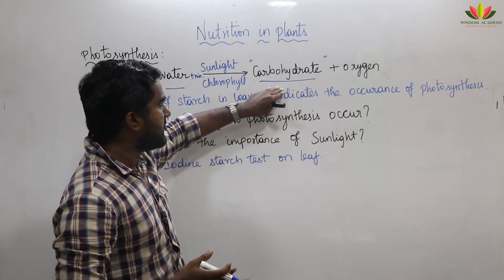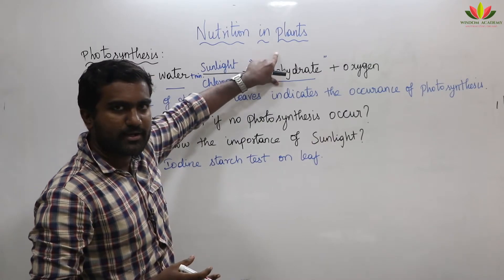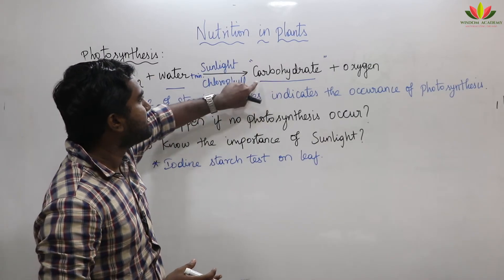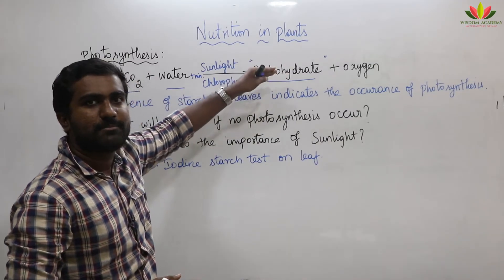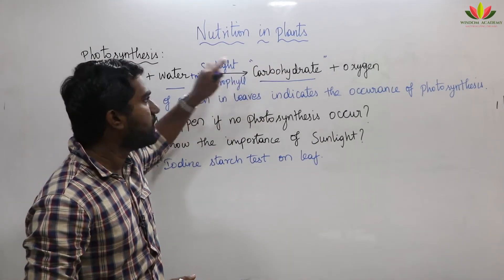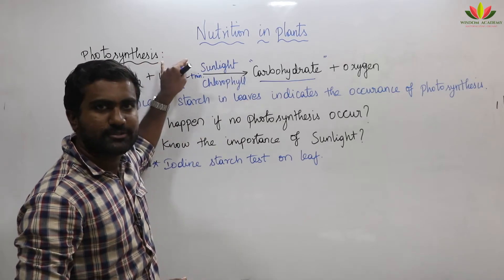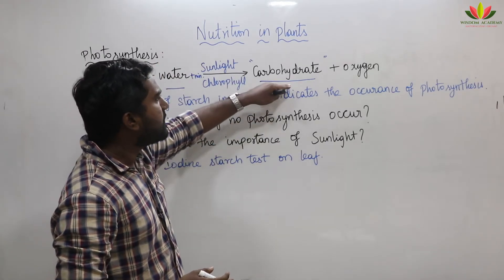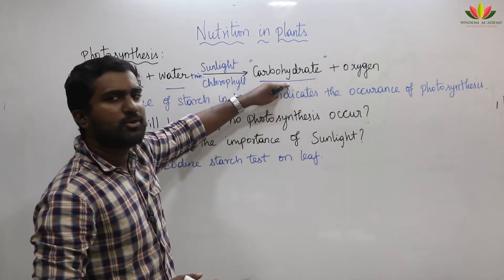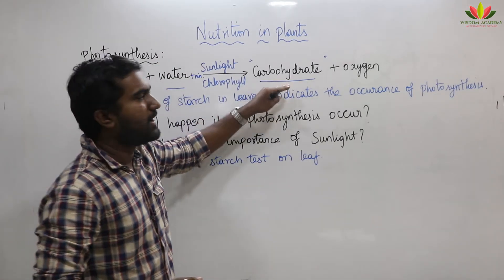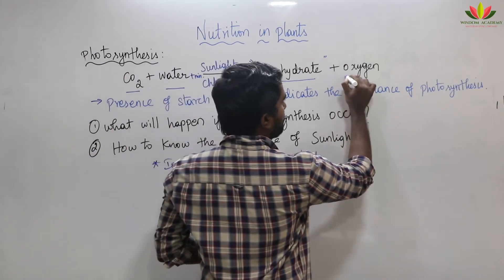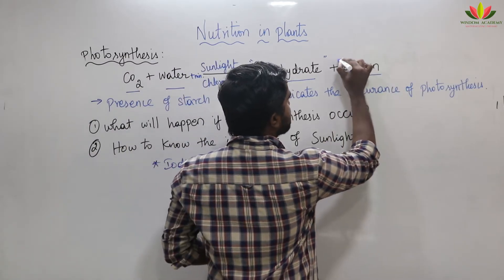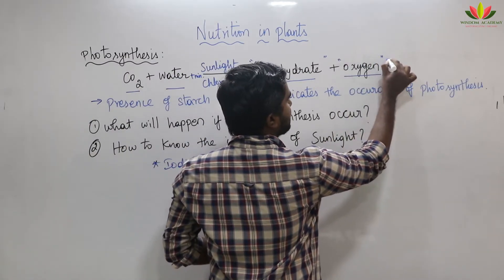Carbohydrates are one of the five elements present in our food. This carbohydrate is the food which is going to be prepared by means of photosynthesis. Photosynthesis also releases oxygen.